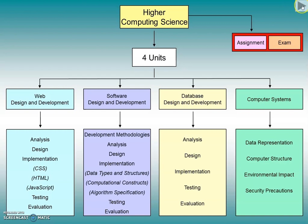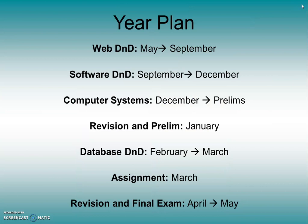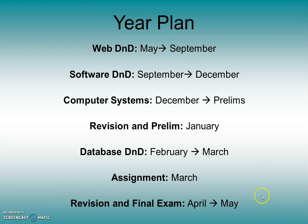That's just to give you a bigger picture overview of where we're moving on to. This would have been the year plan — which I meant to delete but it's still here. Normally we start with web, move on to software, do computer systems at the last gasp just before the prelim. Then you'd have your revision and prelim in January. Databases would be just the same as at National 5 — we'd do that February to March. The assignment will be in March, then revision and the final exam follows in April or May.